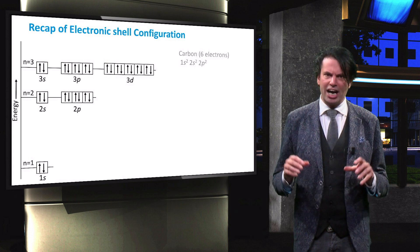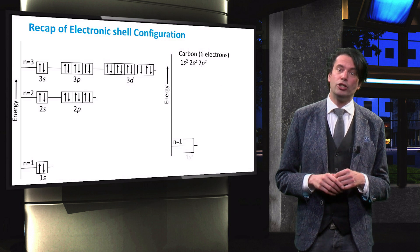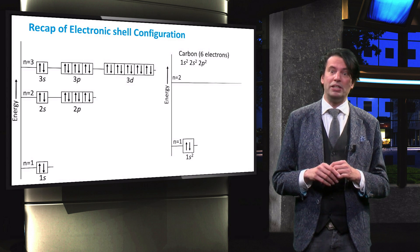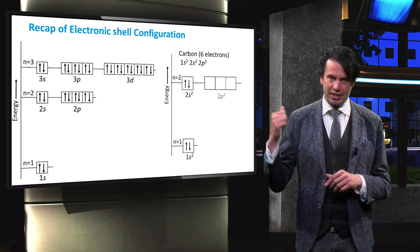Using this rule, the outer shell configuration of carbon is found to be 2s2, 2p2, which should be depicted as shown here.